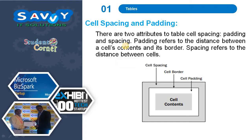Cell spacing and padding. There are two table attributes: cell spacing and cell padding. Padding refers to the distance between a cell's content and its border. This space is called cell padding.